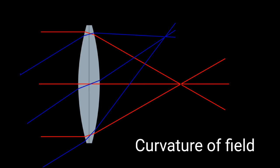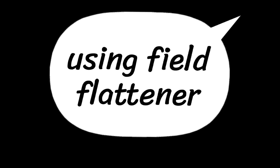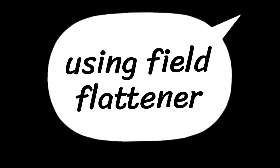The fourth aberration is the curvature of field. In this aberration, a planar object looks curved in its image. You can see how the image plane is not planar. Curvature of field can be minimized by using field flatteners.